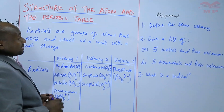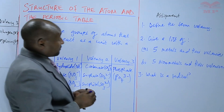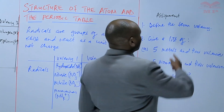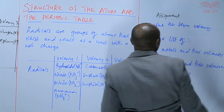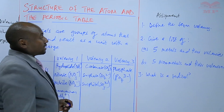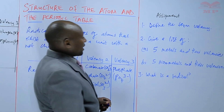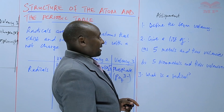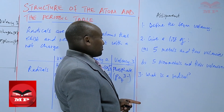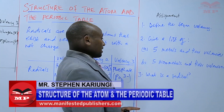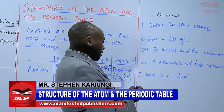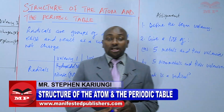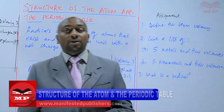For the assignment: question one, define the term valency. Question two, give a list of five metals and their valencies, and part B, five non-metals and their valencies. Question three, what is a radical? Finish that and we'll continue from there. Goodbye.